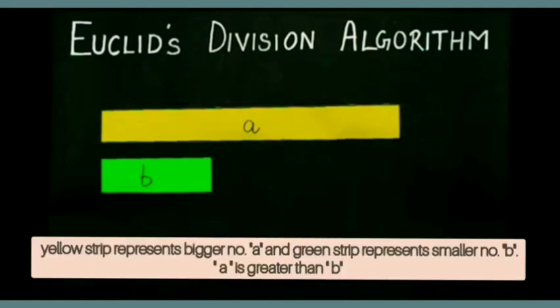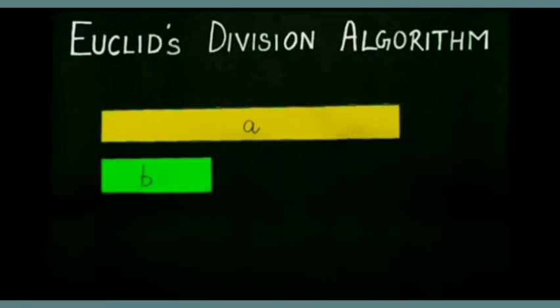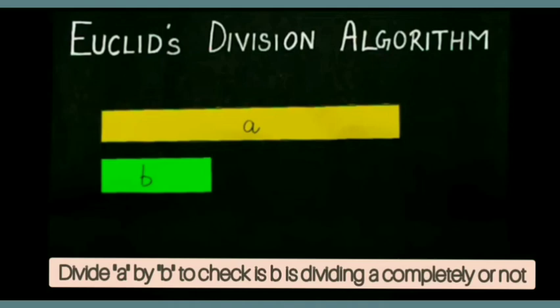Yellow strip represents number A and green strip represents number B, where A is greater than B. Divide A by B means to check B is dividing A completely or not.